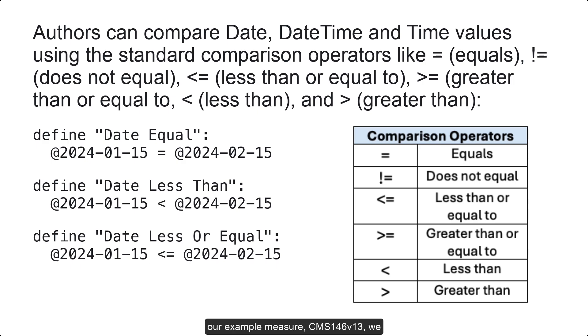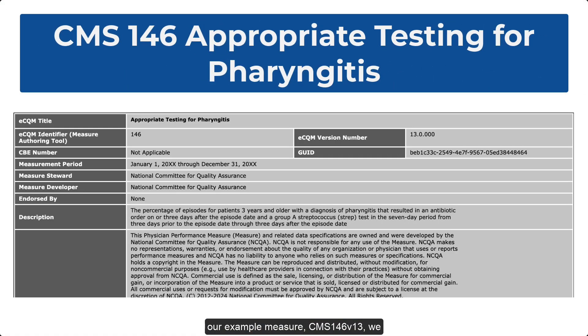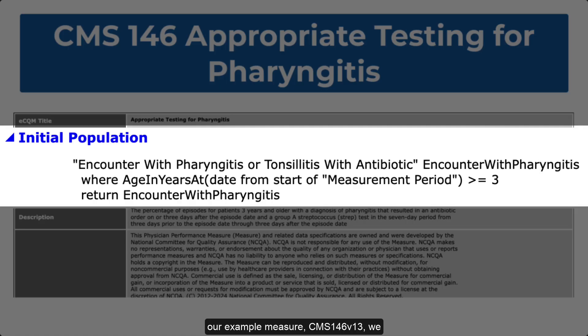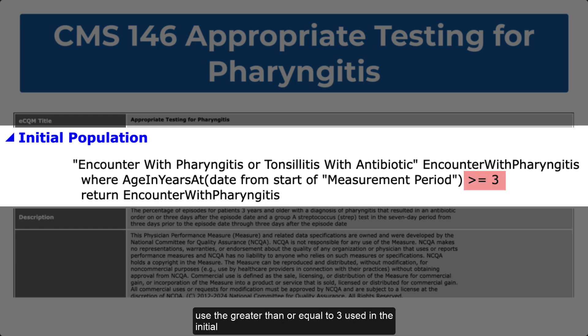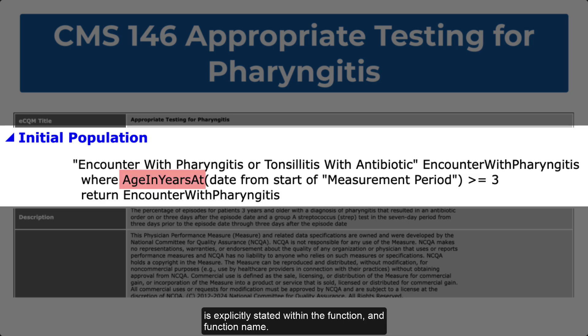In our example measure, CMS146 version 13, we use the greater than or equal to 3 used in the initial population expression. It is important to note that we don't need a unit of measure on the 3, since the unit of measure is explicitly stated within the function and function name.